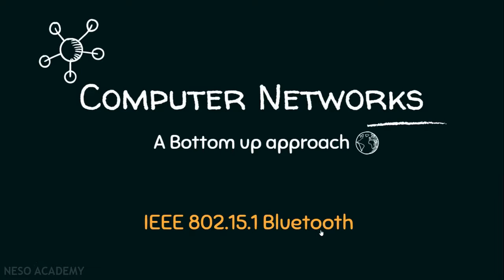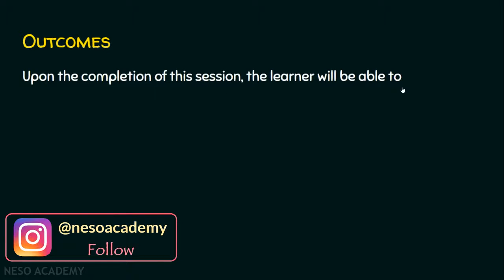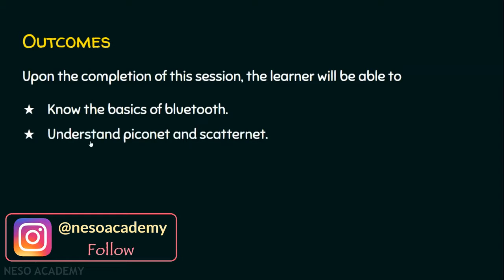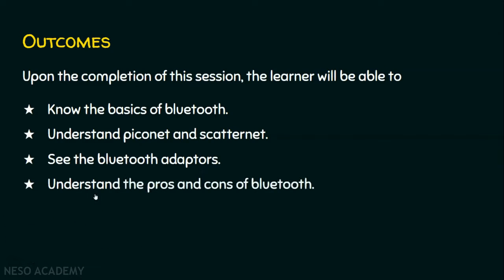As usual, we will start the session with the outcomes. Upon the completion of the session, the learner will be able to: Outcome 1 — know the basics of Bluetooth. Outcome 2 — understand Piconet and Scatternet. Outcome 3 — see the Bluetooth adapters. Outcome 4 — understand the pros and cons of Bluetooth. And the final outcome — know about the Bluesnarfing attack in Bluetooth.